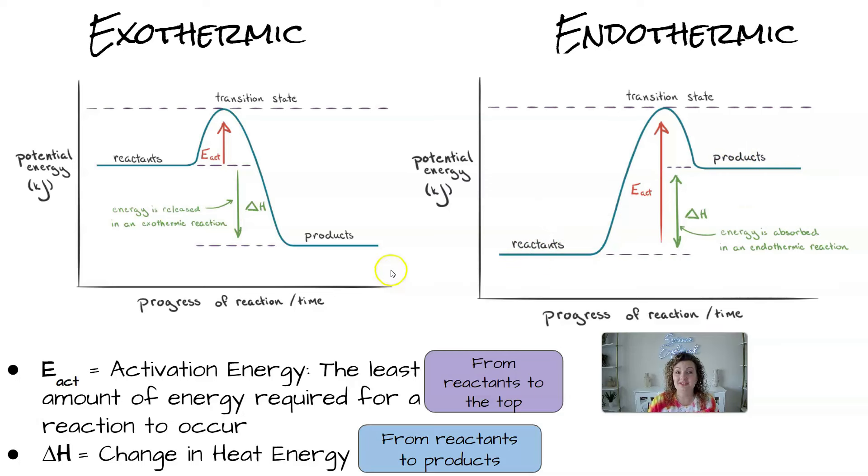Now there's two things on this graph that you really need to know how to find. The first one is activation energy, and that is just how much energy is needed to actually start the reaction. It's the minimum amount. Now in order to find that on the graph, you're going to go from the reactants all the way to the top, to the top of the little bump here. If you subtract these two, you will get your activation energy number.